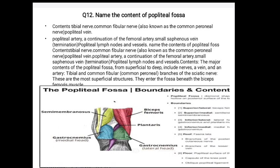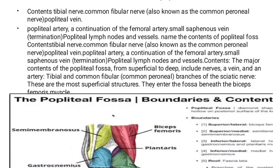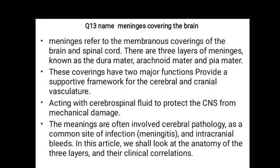The major contents of the popliteal fossa from superficial to deep include nerves, veins, and artery: the tibial and common fibular (common peroneal) branches of the sciatic nerve are the most superficial structures; they enter the fossa beneath the biceps femoris muscle. A diagram of the popliteal fossa boundaries and contents is provided.